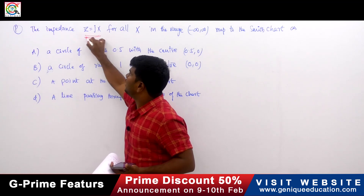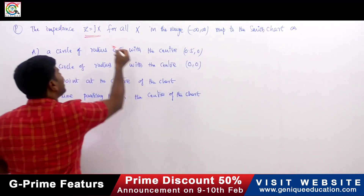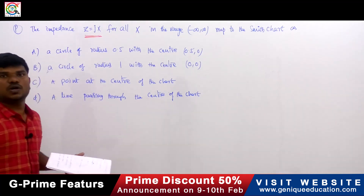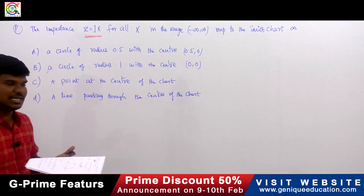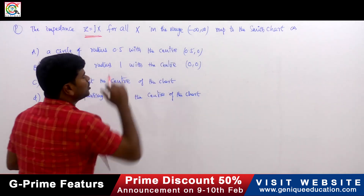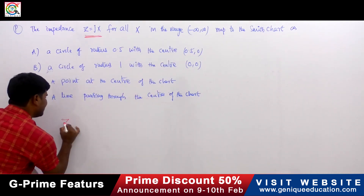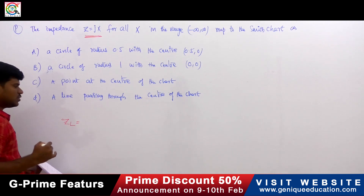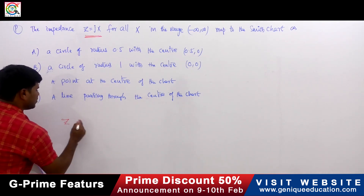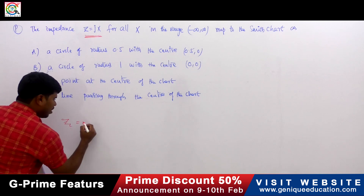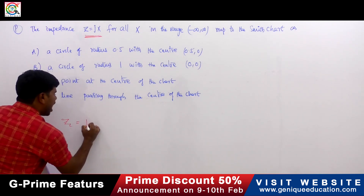Whenever he is talking about the Smith chart, it is given that it is a normalized load impedance. The normalized impedance ZL is equals to R plus jX.